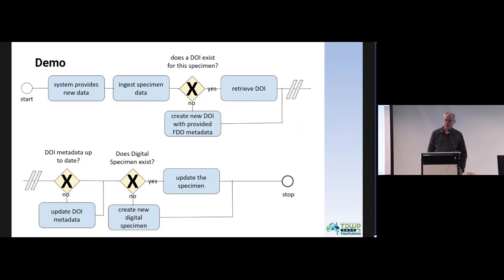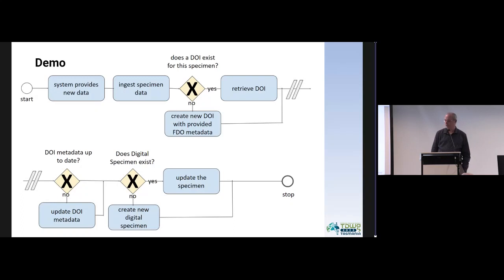I wanted to do a short demo of creating a DOI and making changes to it, but because of the hybrid setup of this meeting I cannot do a live demo. Here is the workflow: we ingest data into DiSSCo coming from a CMS, and we check if a DOI already exists for that specimen. If not, we create a new DOI. If it exists, we check if it's up to date and update if needed. Then we create a new digital specimen or update the specimen with the latest information from the CMS. I have a recording I can show. If you want to see a live demo, contact me at lunchtime.